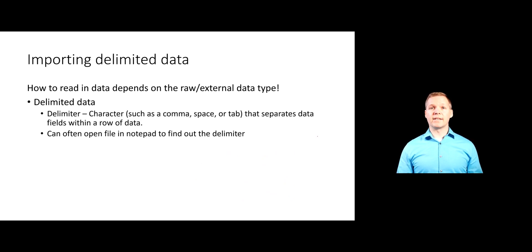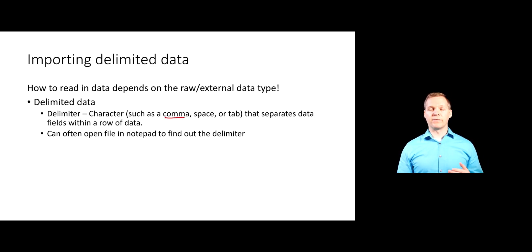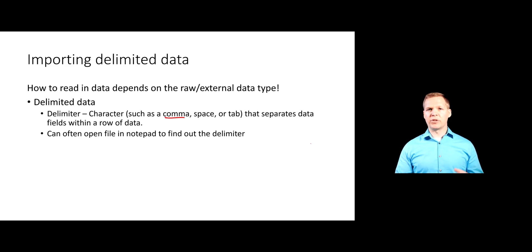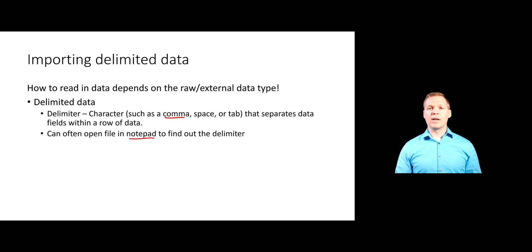What is delimited data? A delimiter is a character or character string that separates the raw data entries in your file. A common delimiter would be a comma — that might be the actual value separating data in your raw file. If you know you have delimited data but don't know what the delimiter is, you can open your file in something like Notepad or Notepad++ to visually identify the delimiter type.